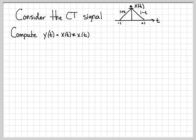The triangle signal x of t has a total width of 2. On the negative time side, it is a positive slope line, so that's why it's 1 plus t — it has a slope of positive 1. On the positive time side, it has a negative slope line, so that equation is 1 minus t. We'll need those equations as we do the convolution integral.